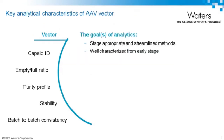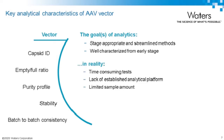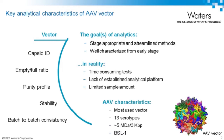The goals of these analytics need to be stage-appropriate and streamlined to support process and product development, ensuring we analyze the appropriate characteristics—the CQAs of the molecule, protein structure, and ultimately the DNA within the AAV capsids. In reality, these tests can be very time-consuming. There is a lack of an established analytical platform for these analyses, and compared to our experience with monoclonal antibodies, we have limited sample amounts and low sample concentrations, making method development far more challenging.